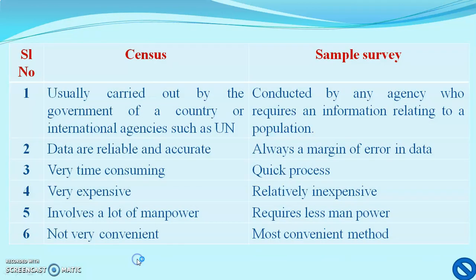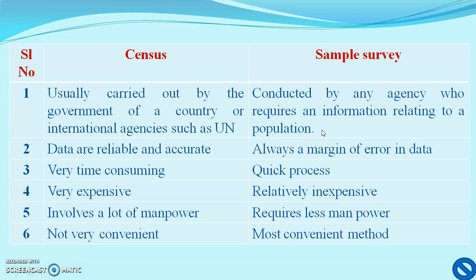Now let's differentiate between census and sample surveys. Census is usually carried out by the government of a country or international agencies such as the UN, because it is a very tedious task requiring a lot of resource persons, money, and time. Sample surveys are conducted by agencies that require information relating to a population — maybe a newspaper, social organization, or other agency. Data are reliable and accurate in the case of census because it is done systematically and scientifically, but sample surveys may not be that perfect and always carry a margin of error.